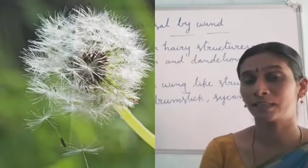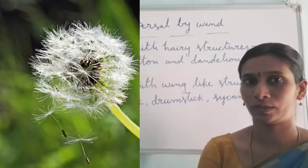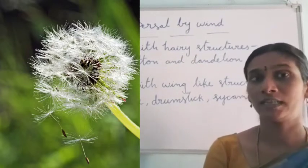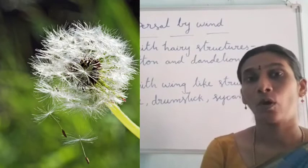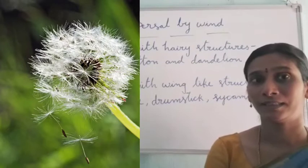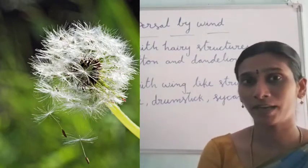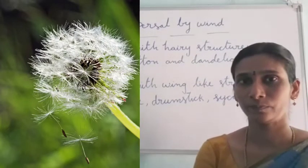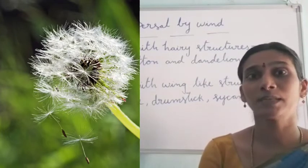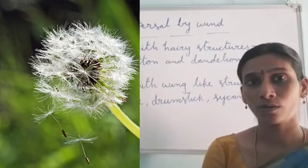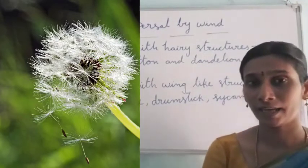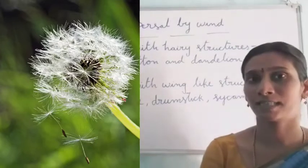So how are seeds dispersed by wind? Seeds which are dispersed by wind are very light in weight. Because of that, they can easily be dispersed by wind. Some seeds which are dispersed by wind have feathery structures such as hairy and wing-like structures.